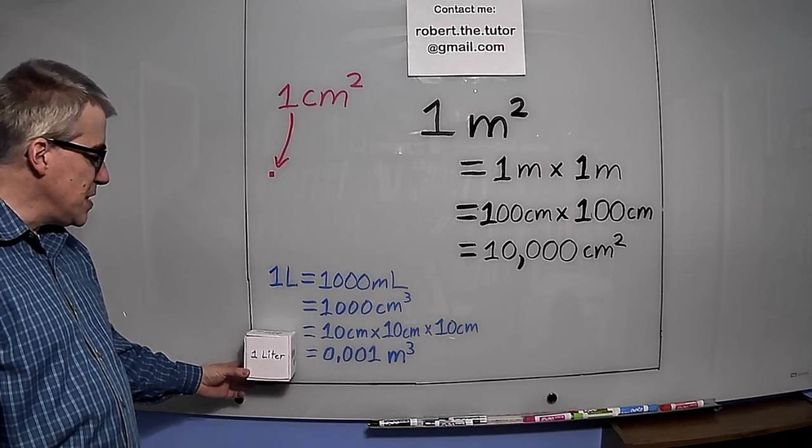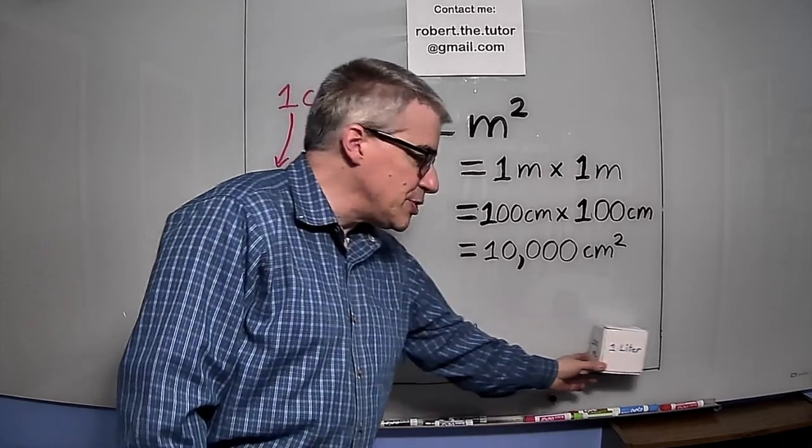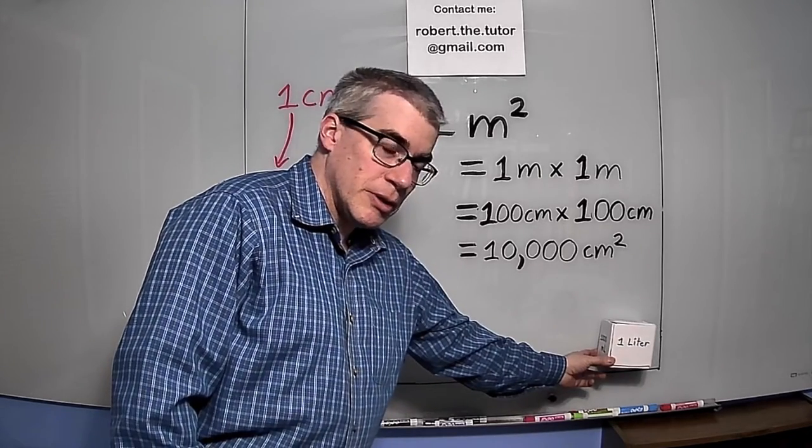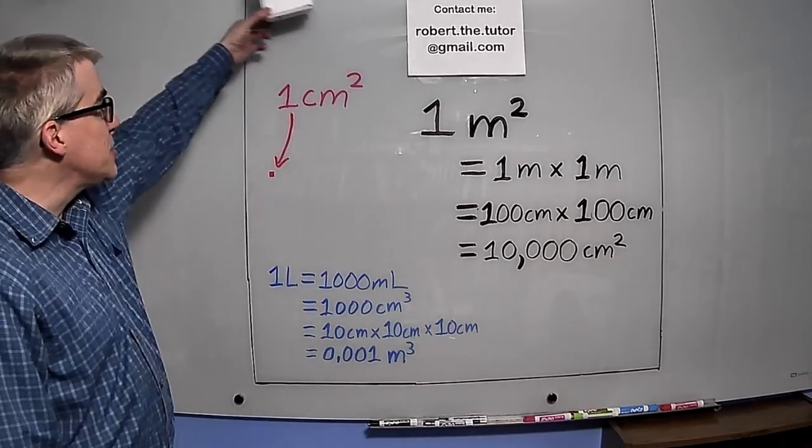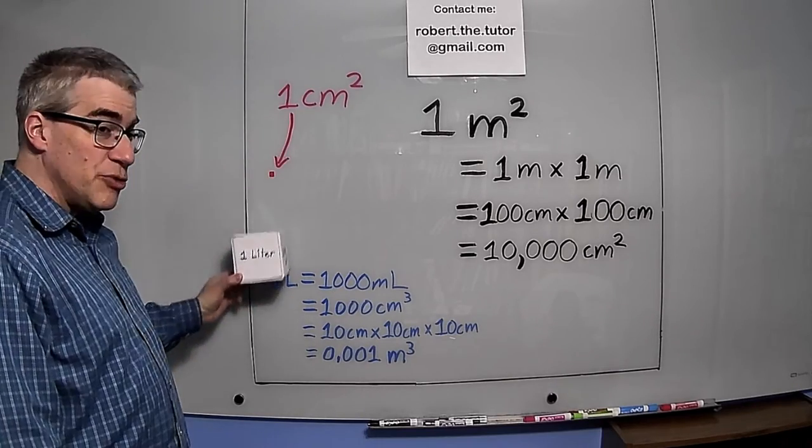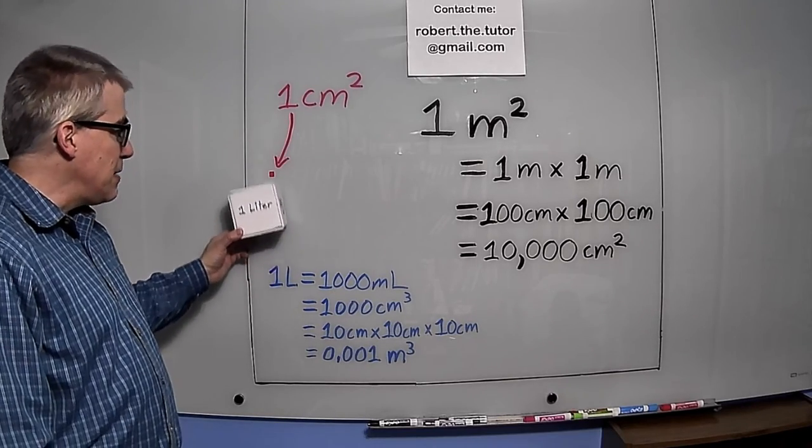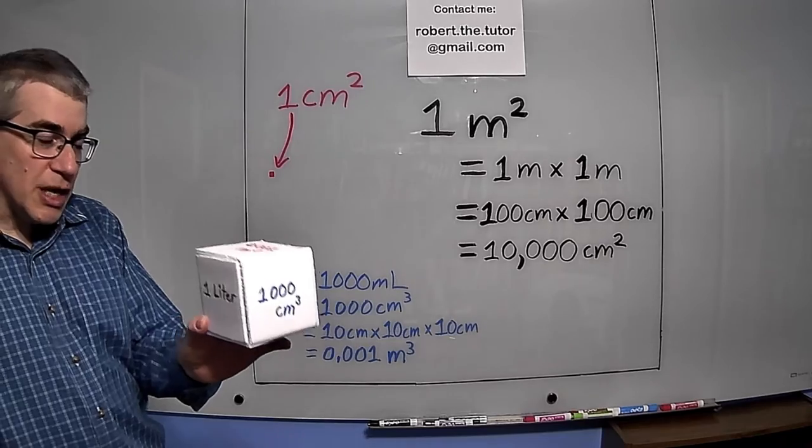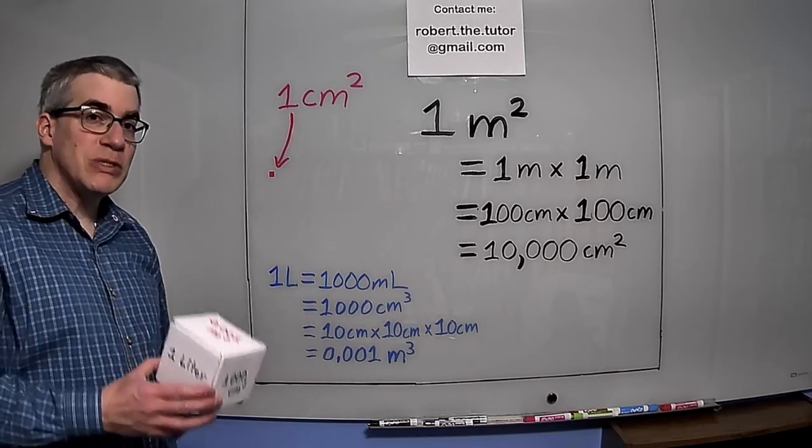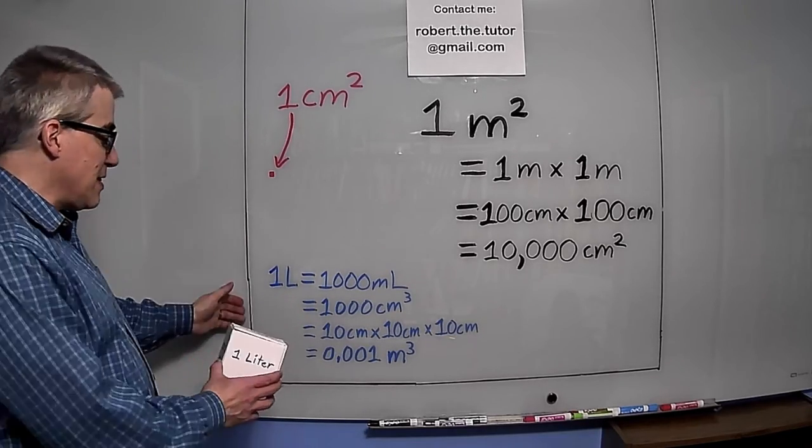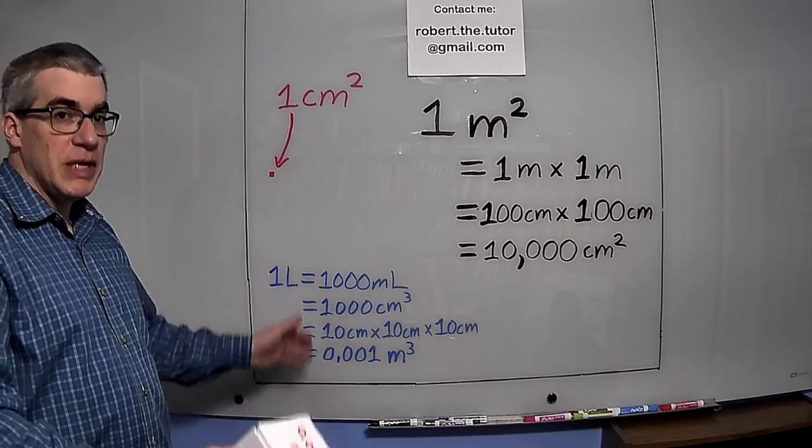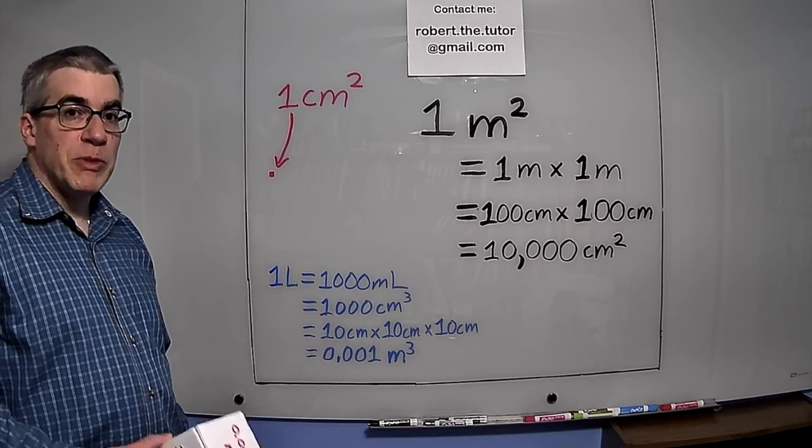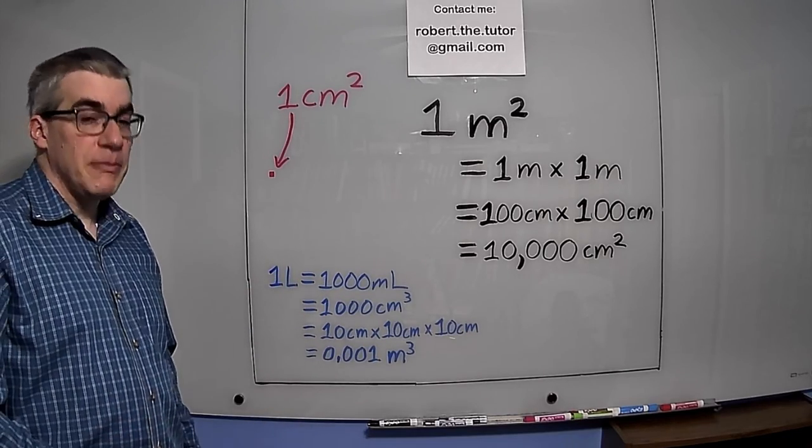Now 10 of these in a row would reach across the meter here. And then 10 layers would make 100 liters. And then 10 of those coming out would be a thousand liters. So it would take a thousand liters to make a cubic meter. And if you fill that with water, it is literally a metric tonne.